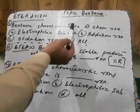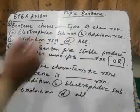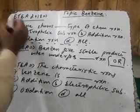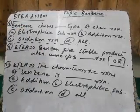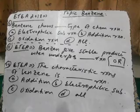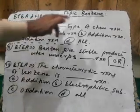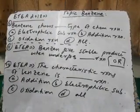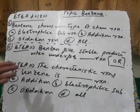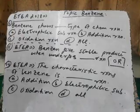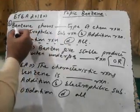Many students chose electrophilic substitution for the first question. But the question is: which reaction can occur in benzene — i.e., 'Benzene shows dash type of reaction.' The question is NOT asking which reaction gives a stable product, so we must consider all possible reactions.